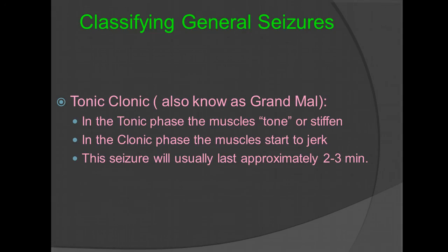Tonic-clonic seizures, also known as grand mal seizures: the tonic phase is where the muscles tone or stiffen, the clonic phase is where the muscles start to jerk, and the seizure can usually last for around 2 to 3 minutes. Some manuals also say that tonic-clonic seizures can last up to 5 minutes, with a post-ictal state lasting 5 to 30 minutes.